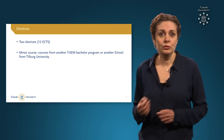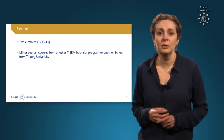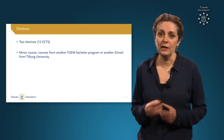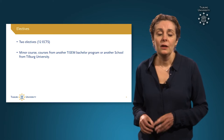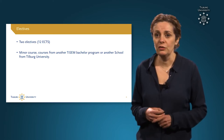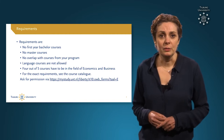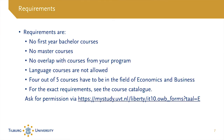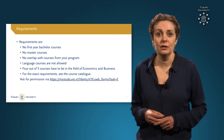Besides the minor, you choose two electives. Most students choose courses from another minor, but it is also possible to choose courses from another Bachelor of TiSEM or from another school. For courses from outside of TiSEM, you need to ask for permission beforehand. The most important requirements for electives are that it is not allowed to choose first-year Bachelor courses or Master courses. The courses should not overlap with courses from your program. Language courses are not allowed. From your minor and the two electives, four out of five courses have to be in the field of Economics and Business, which means that one course can be from another field. For the exact requirements, please go to the course catalogues in Osiris.